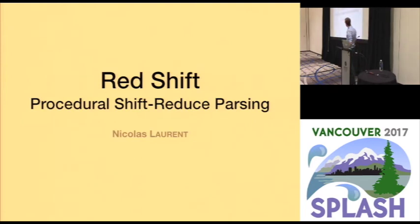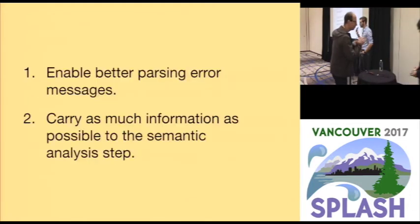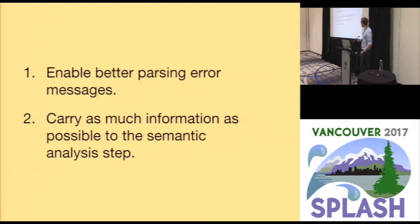I'd like to talk about how to write bottom-up parsers by hand. There are two main objectives: the first is to produce better error messages, and the second is to carry as much information as possible to the semantic analysis stage — that's what typically comes after parsing, where you do type checking, type inferencing, and name binding.